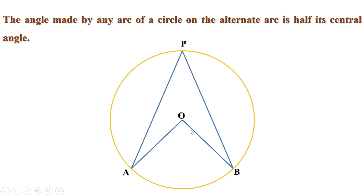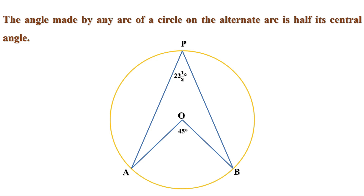Angle APB is the angle made by the arc on its alternate arc, and angle AOB is its central angle. Therefore, angle APB is half of angle AOB. Now suppose angle AOB is 45 degrees — then angle APB is half of it, which is 22 and a half degrees. Using this idea, we can make an angle of 22 and a half degrees.